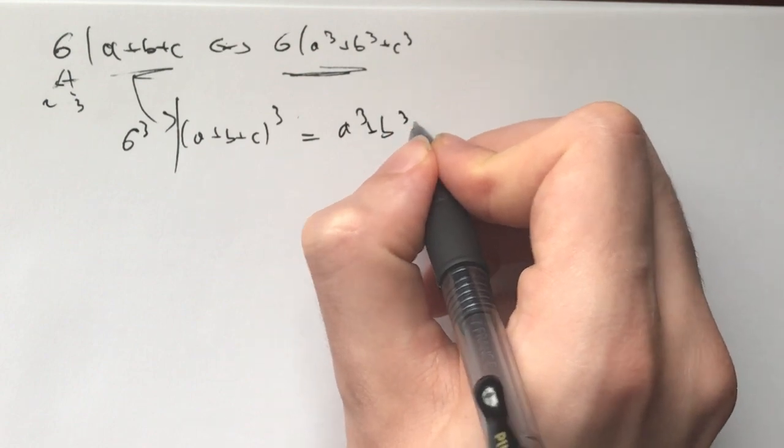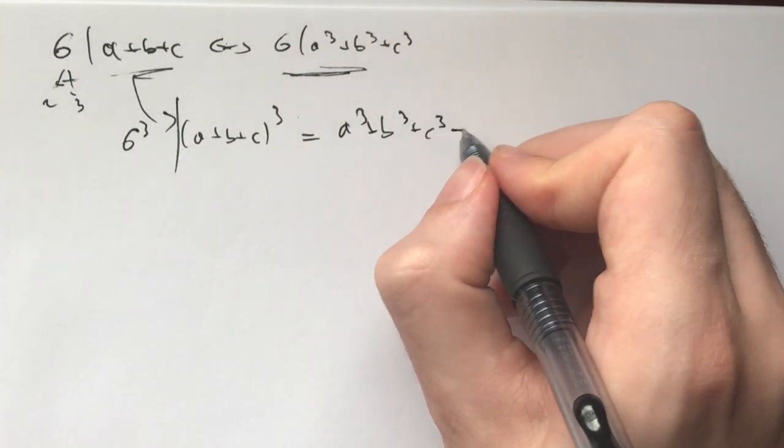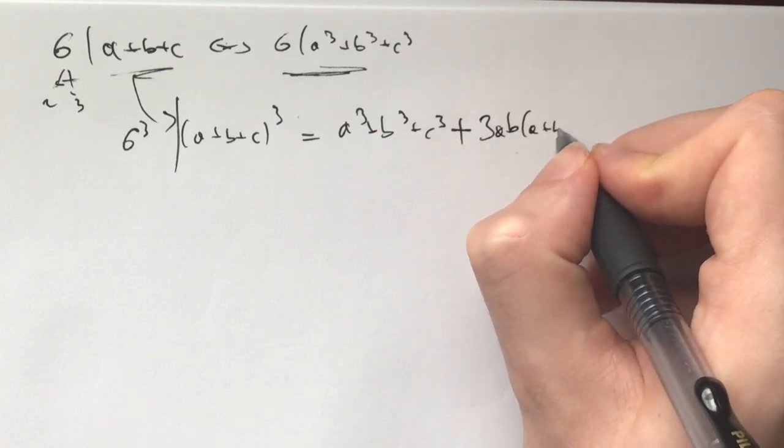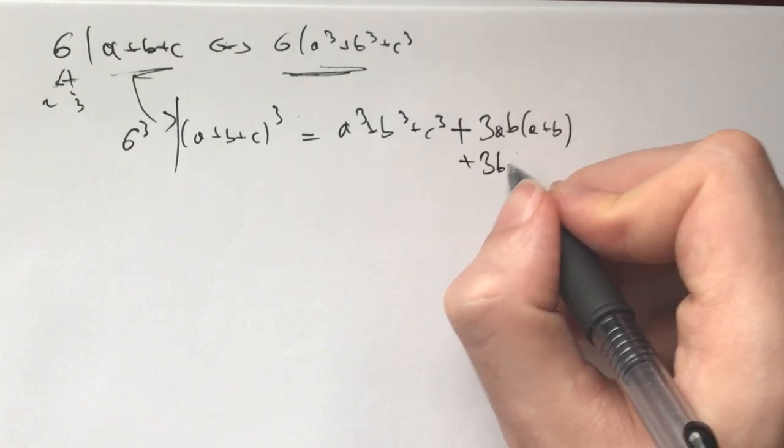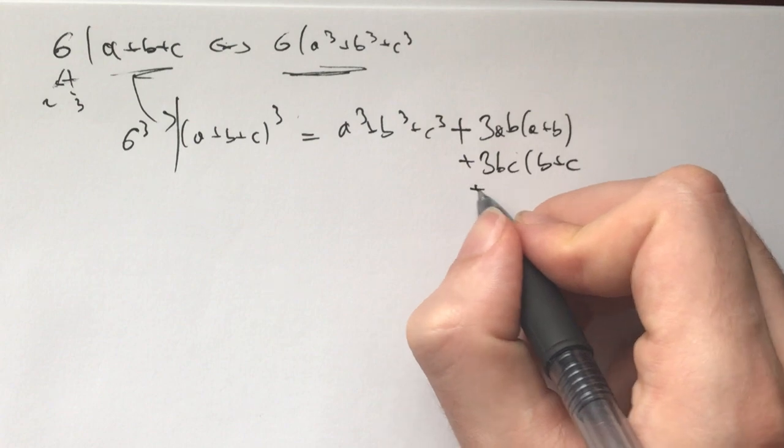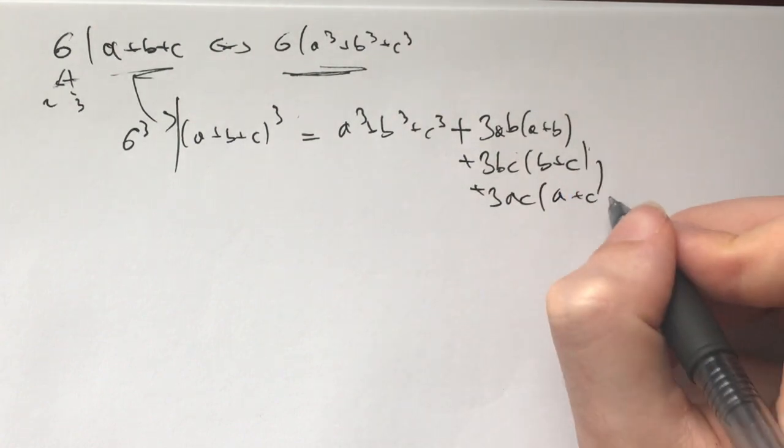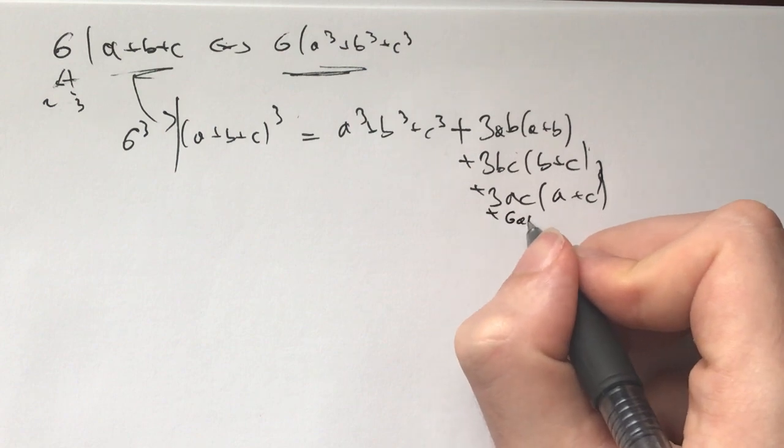And this is going to give me the a cubed b cubed c cubed. And then the rest I'll have 3ab times a plus b plus 3bc times b plus c plus 3ac times a plus c. And I'll have plus 6abc.